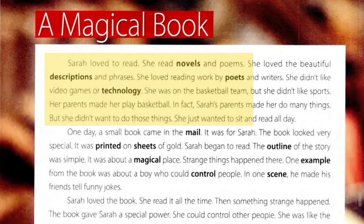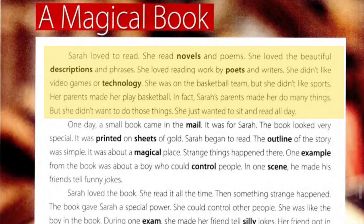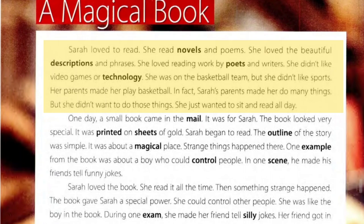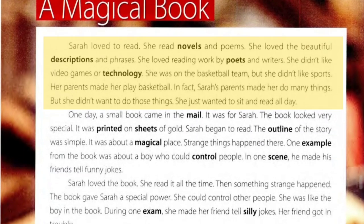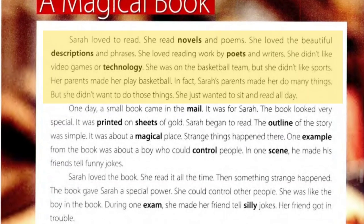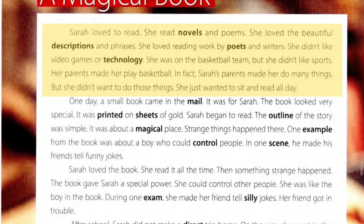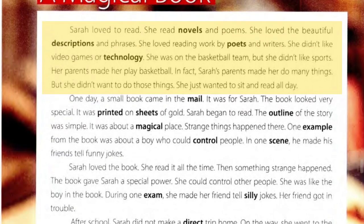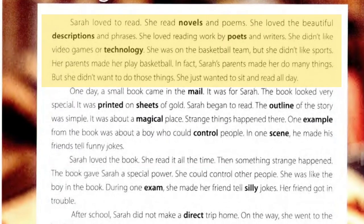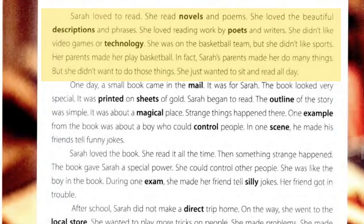Now practice your words in the story: A Magical Book. Sarah loved to read. She read novels and poems. She loved the beautiful descriptions and phrases. She loved reading work by poets and writers. She didn't like video games or technology. She was on the basketball team but she didn't like sports. Her parents made her play basketball.